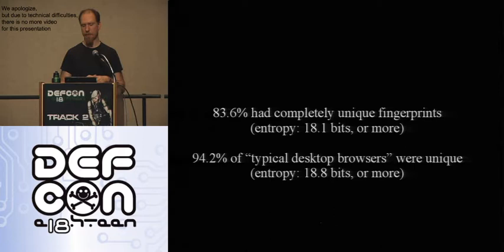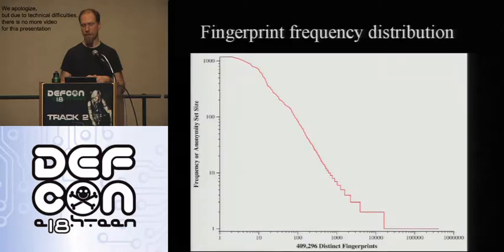94% uniqueness, and only 1% have a fingerprint that we saw more than twice. This is the same thing on a graph. Note that this graph has log axes.